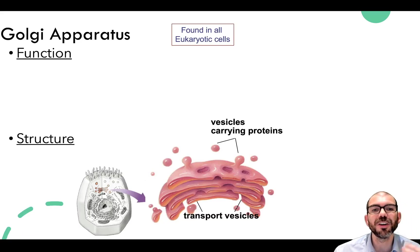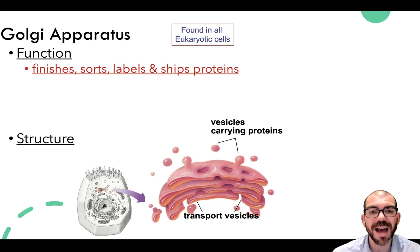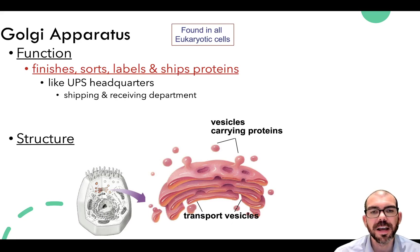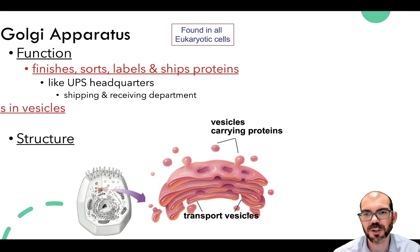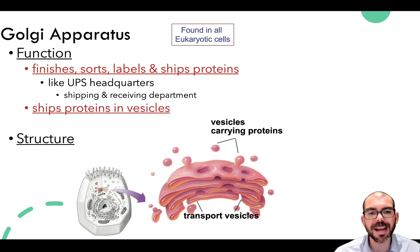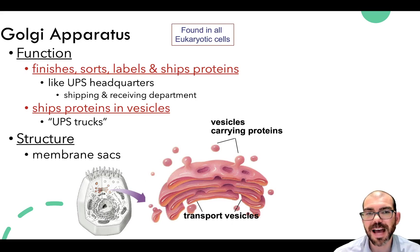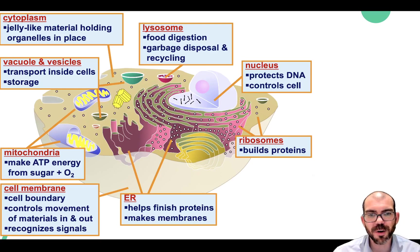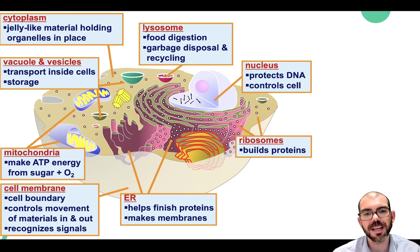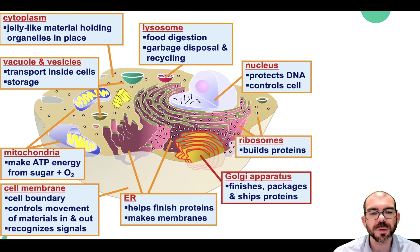Next up is the Golgi apparatus, which is found only in eukaryotic cells. The primary function of the Golgi apparatus is to finish, sort, label, and package proteins — it's the UPS of the cell. It receives products such as proteins, packages them, folds them, and sends them to their designated destination by packaging into vesicles. That's a key way of finding the Golgi on a cell diagram: they're usually depicted with vesicles moving in and out. Its structure is a membranous sac. On a cell diagram, the Golgi is further from the nucleus than the ER and has many infolds but no attached ribosomes.